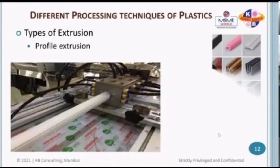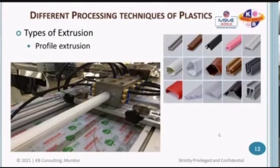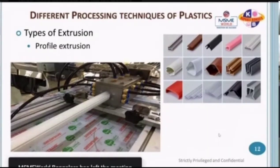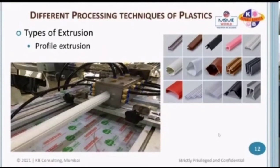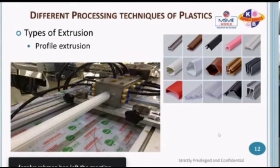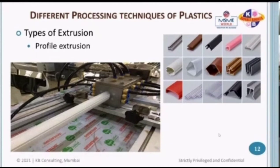The last extrusion process we look at is profile extrusion. Similar to tube extrusion, the only difference is there is a different die — instead of tubing, it creates profiles. Different kinds of profiles are used throughout industrial and home applications. Depending on the polymer used, plastic profiles can easily replace metal profiles because metal profiles are expensive and plastic profiles could be cheaper. Also, while metal profiles have some shape limitations, plastic profiles can be of any shape — that's the advantage.